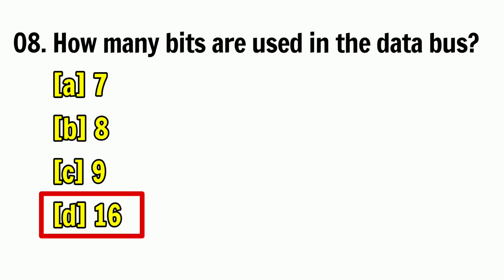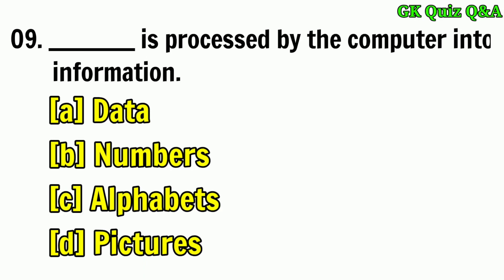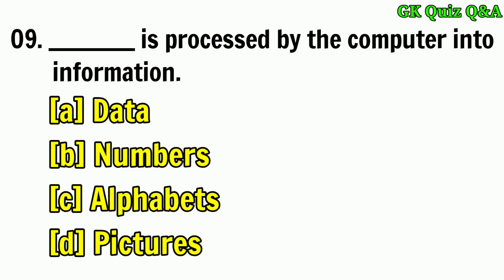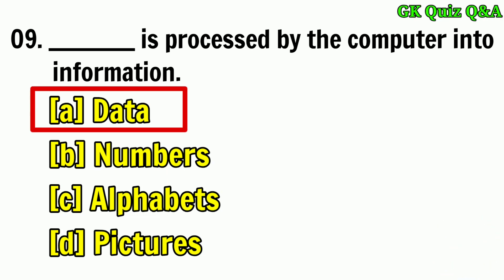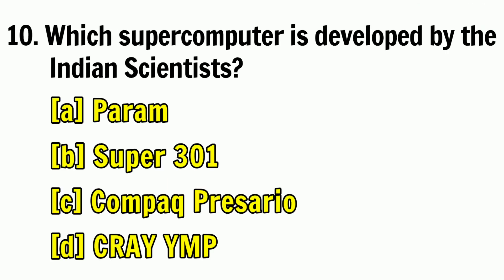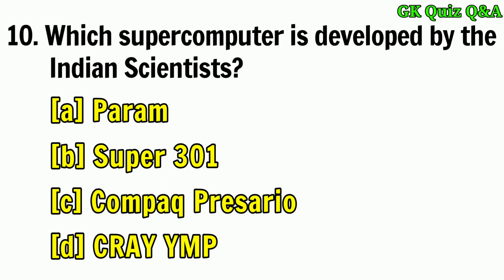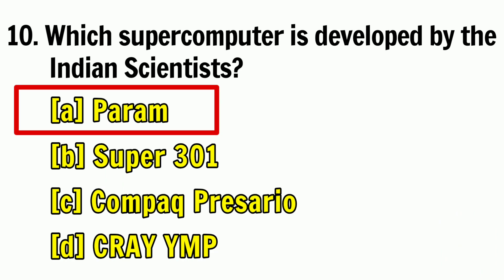Answer: D — 16 bits. Dash is processed by the computer into information. Answer: A — Data. Which supercomputer is developed by Indian scientists? Answer: A — PARAM.